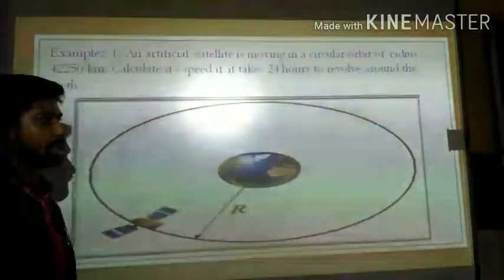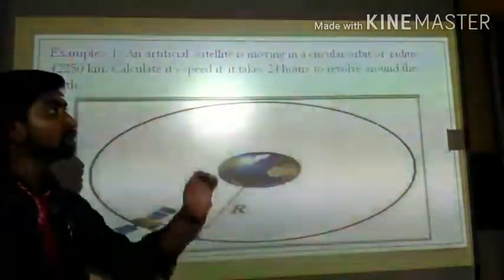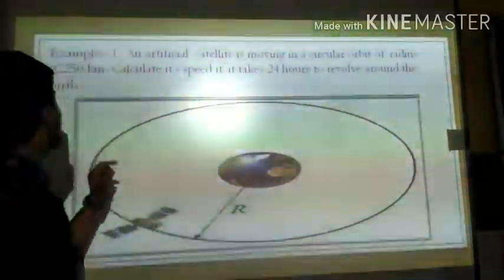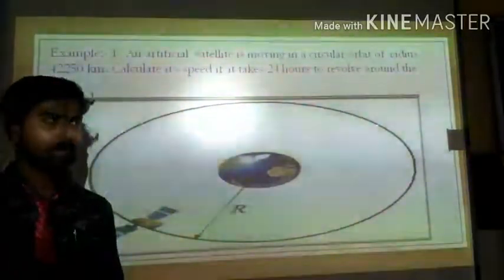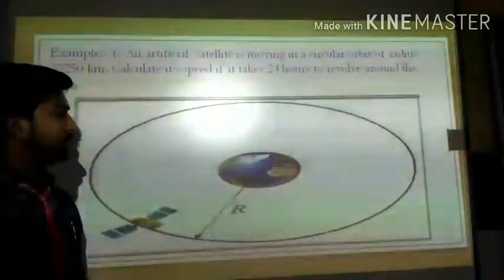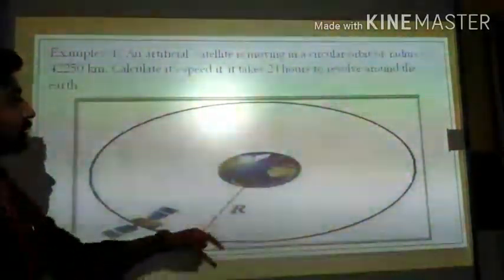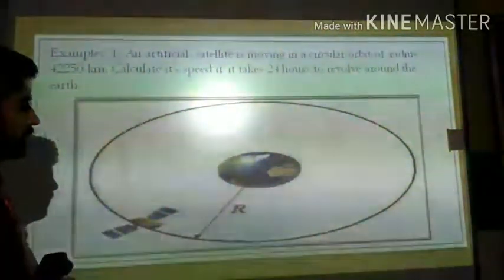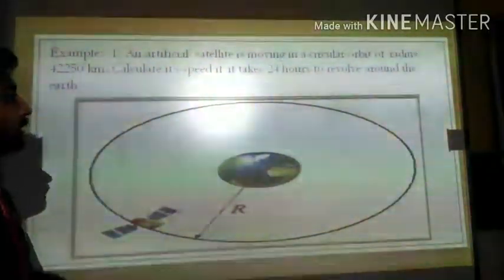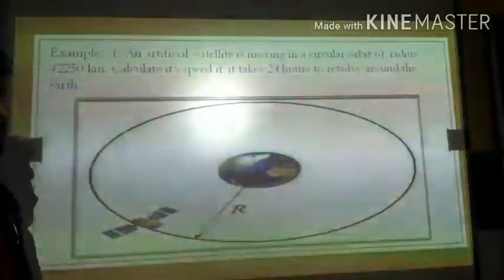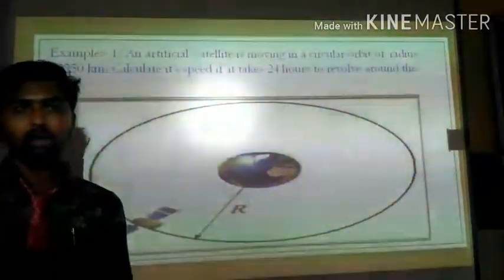Let us take an example to understand. An artificial satellite is moving in a circular orbit of radius 42,250 km. We need to calculate its speed if it takes 24 hours to revolve around the Earth. We can see from the image: there is the Earth, and a satellite moving along a circular orbit of radius 42,250 km.